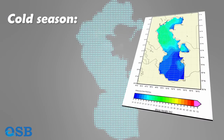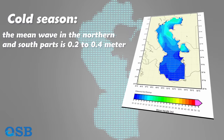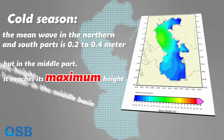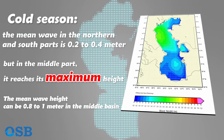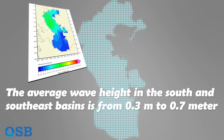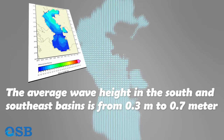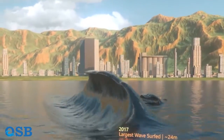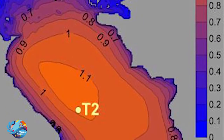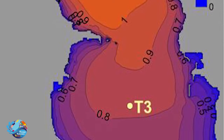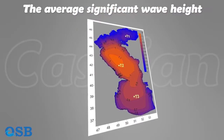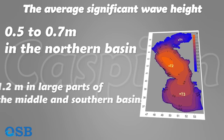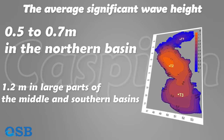In the cold season, the mean wave in the northern and southern parts is 0.2 to 0.4 meter, but in the middle part it reaches its maximum height. The mean wave height can be 0.8 to 1 meter in the middle basin. The average wave height in the south and southeast basins is from 0.3 to 0.7 meter. The average significant wave height — the average of one-third of the highest waves — is 0.5 to 0.7 meter in the northern basin, and around 1.2 meter in large parts of the middle and southern basins.